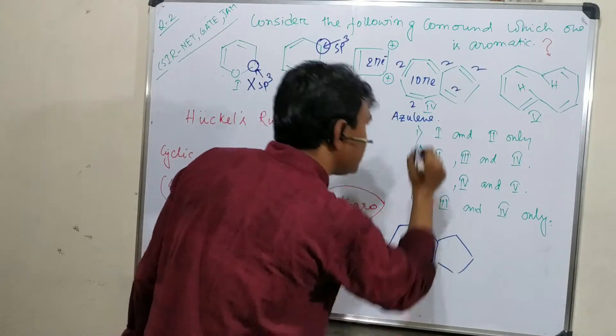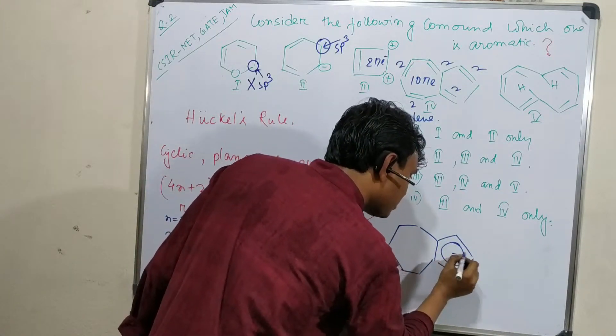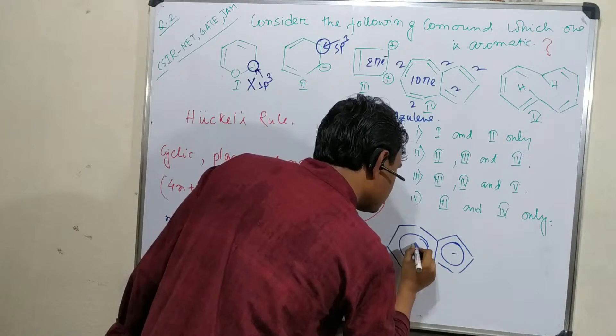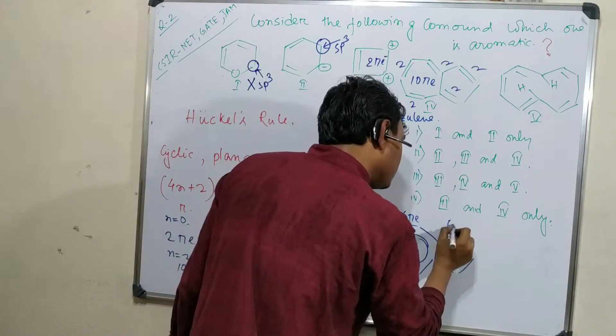So here if it gives 1 electron to this, this contains 6 pi electrons negative and this is positive, so it also 6 pi electrons.